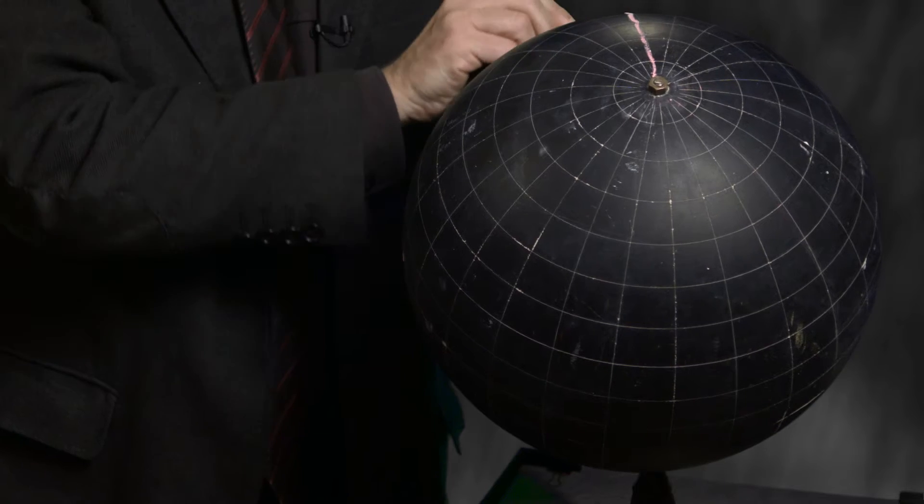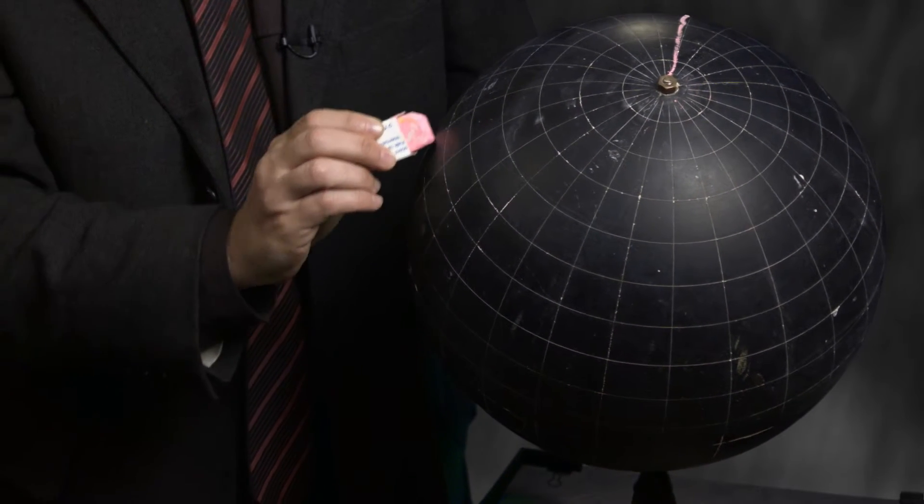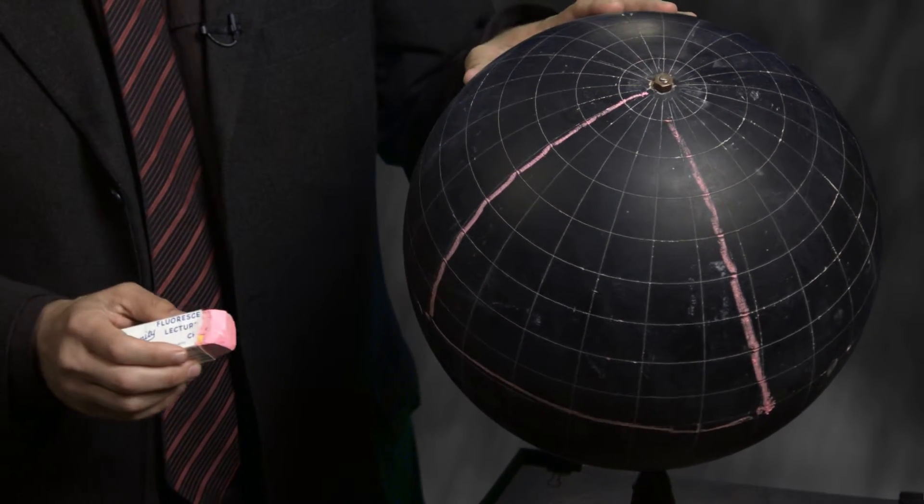And my triangle goes from the North Pole to the equator, along the equator, and then back up a longitudinal line to the North Pole. This is a nice triangle here.